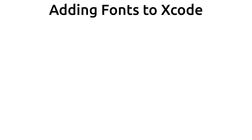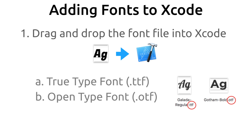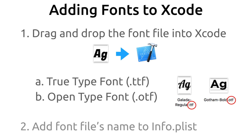There are two main steps when it comes to adding a custom font to your project. The first step is to add the actual file to your Xcode project, and you can simply do this by dragging and dropping that file into your project. Xcode will accept two font formats: a TrueType font format and an OpenType font format, and you can figure out what they are by looking at the extension of the file. The second thing you need to do is add the font file's name to the info.plist file, which is in your Xcode project. This will let iOS know about that font.